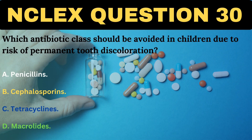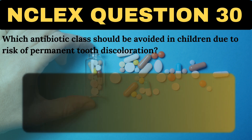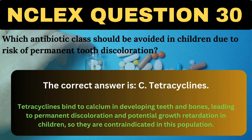Which antibiotic class should be avoided in children due to risk of permanent tooth discoloration? A. Penicillins. B. Cephalosporins. C. Tetracyclines. D. Macrolides. The correct answer is C, Tetracyclines. Tetracyclines bind to calcium in developing teeth and bones, leading to permanent discoloration and potential growth retardation in children, so they are contraindicated in this population.